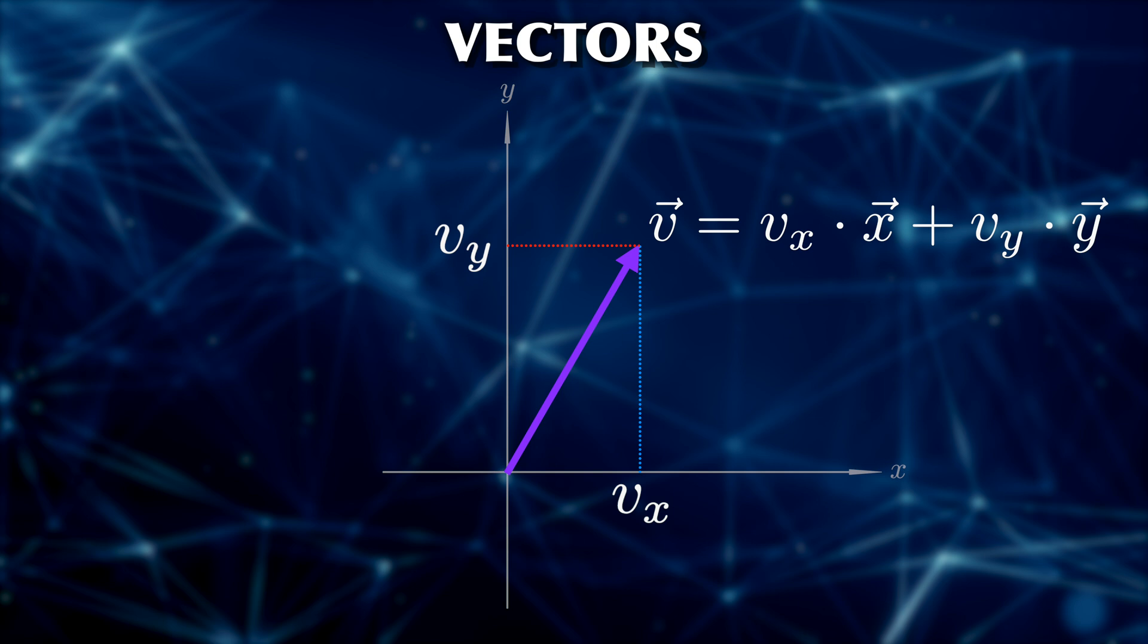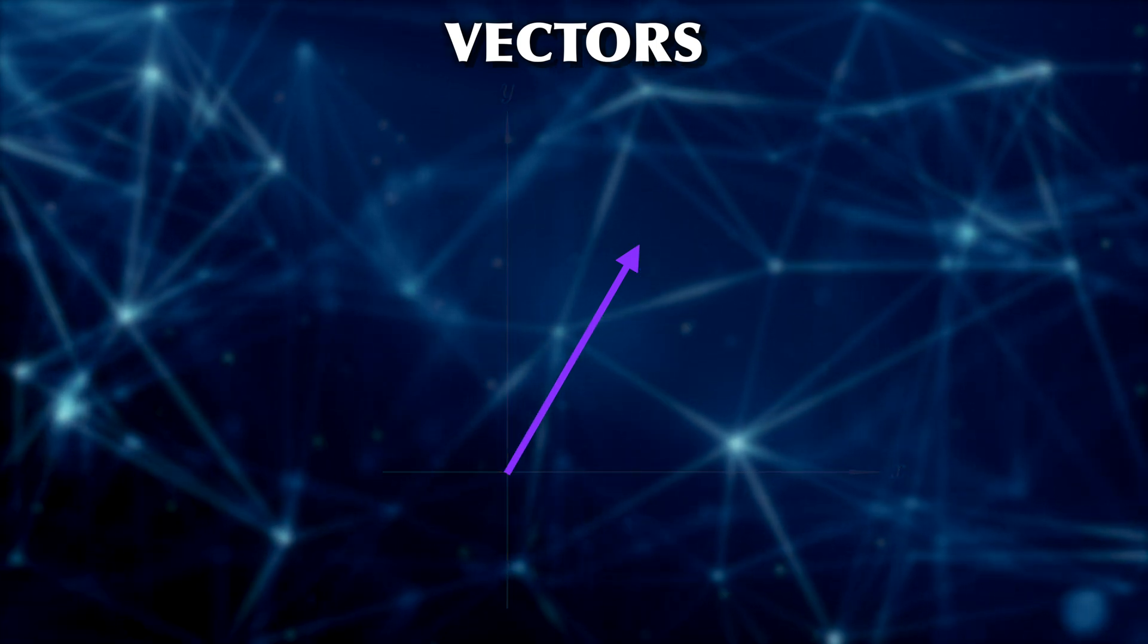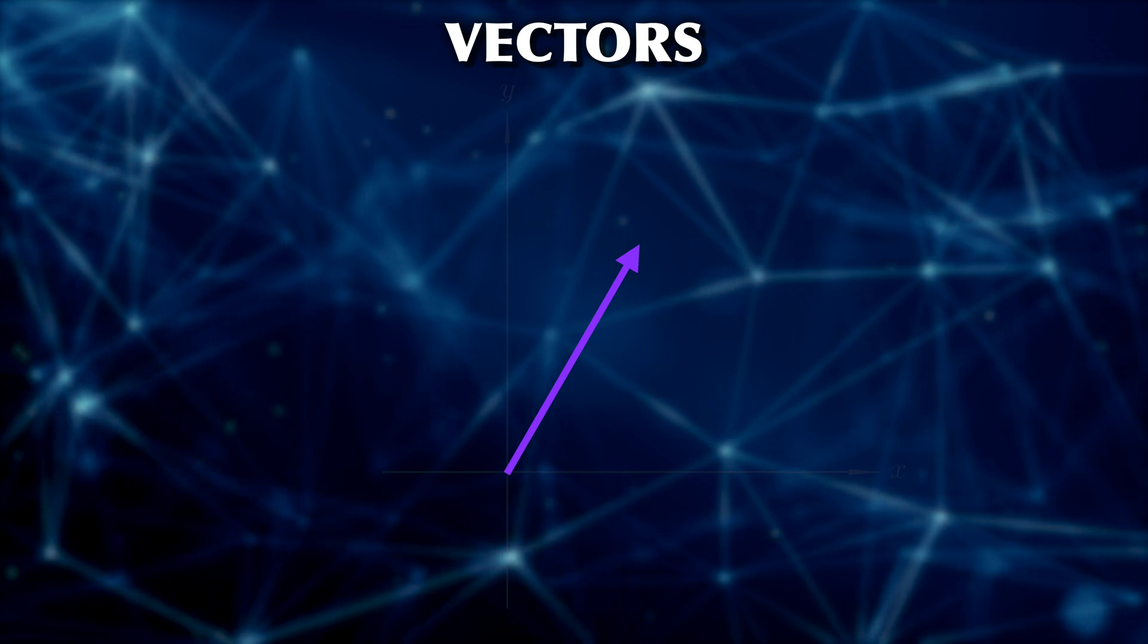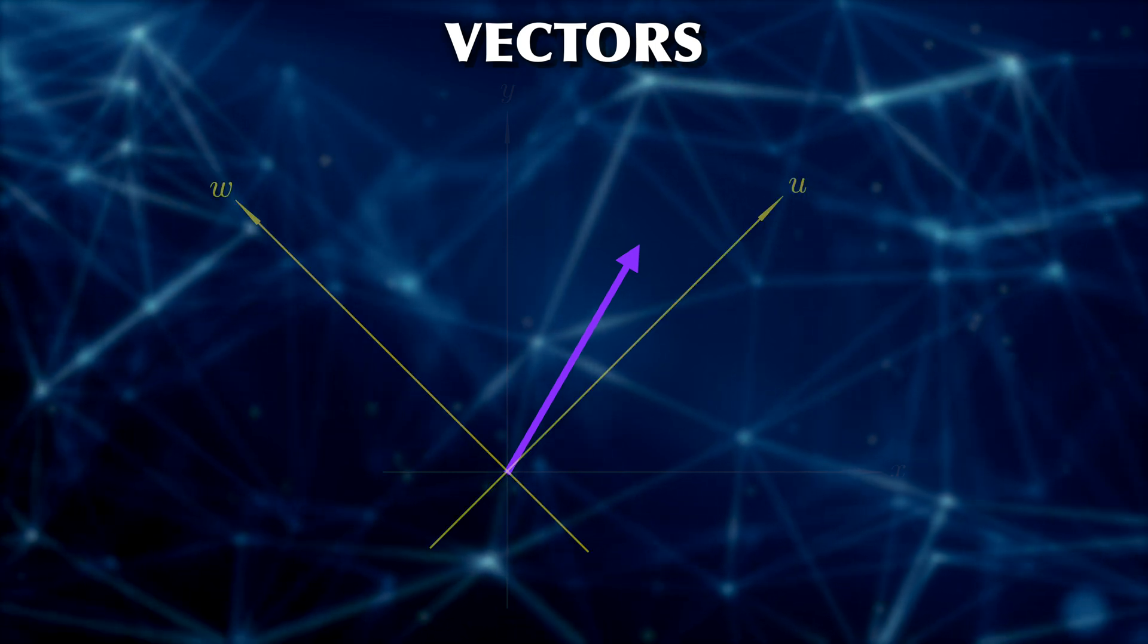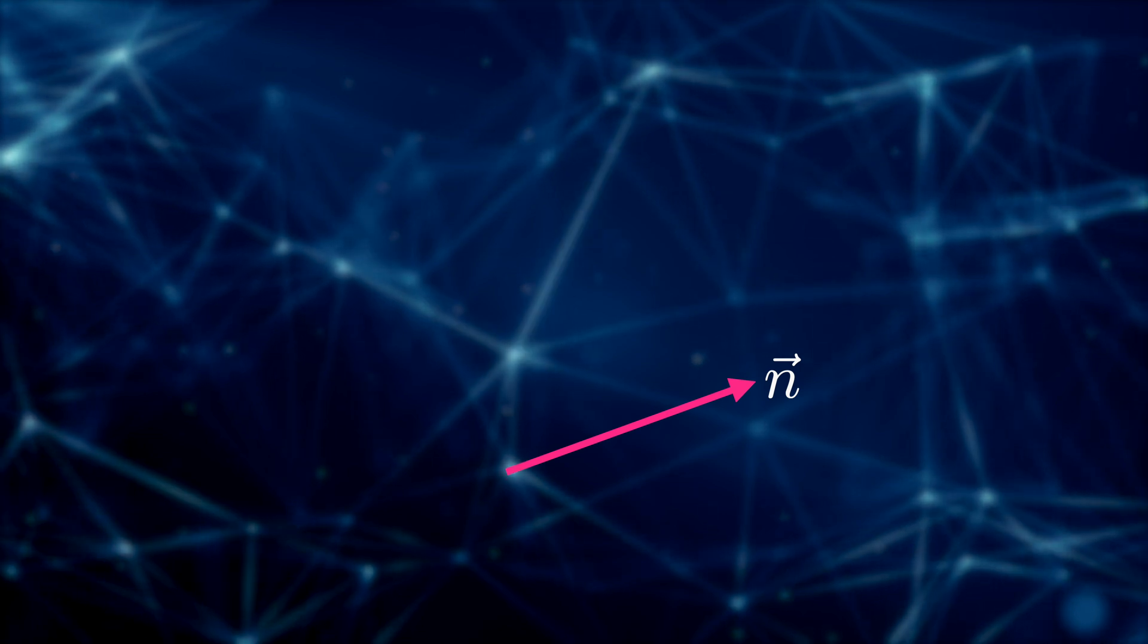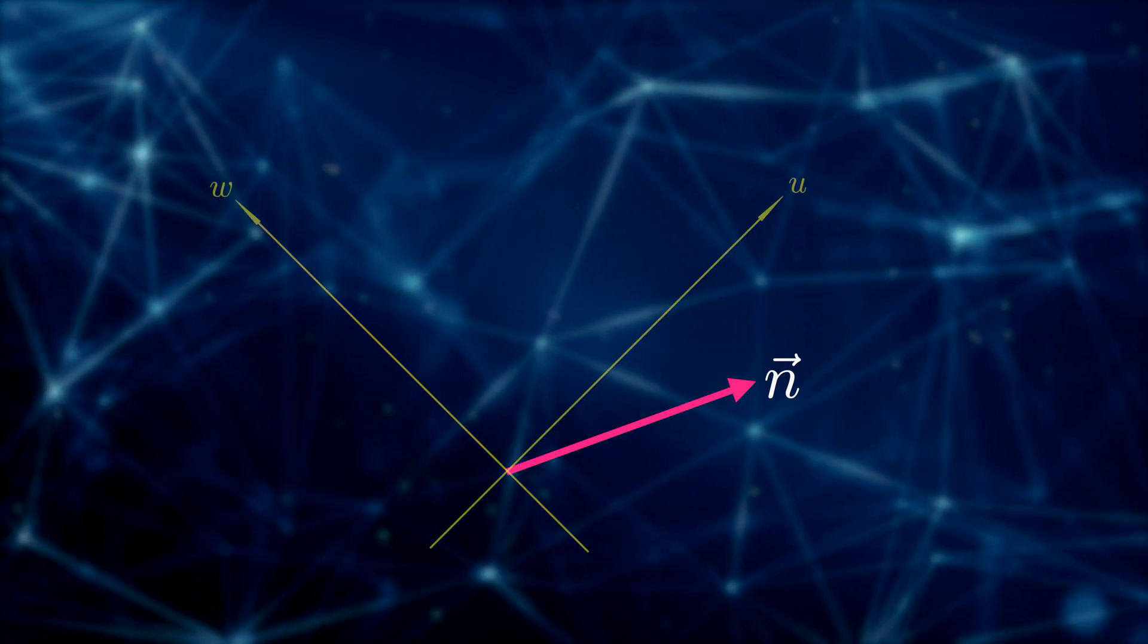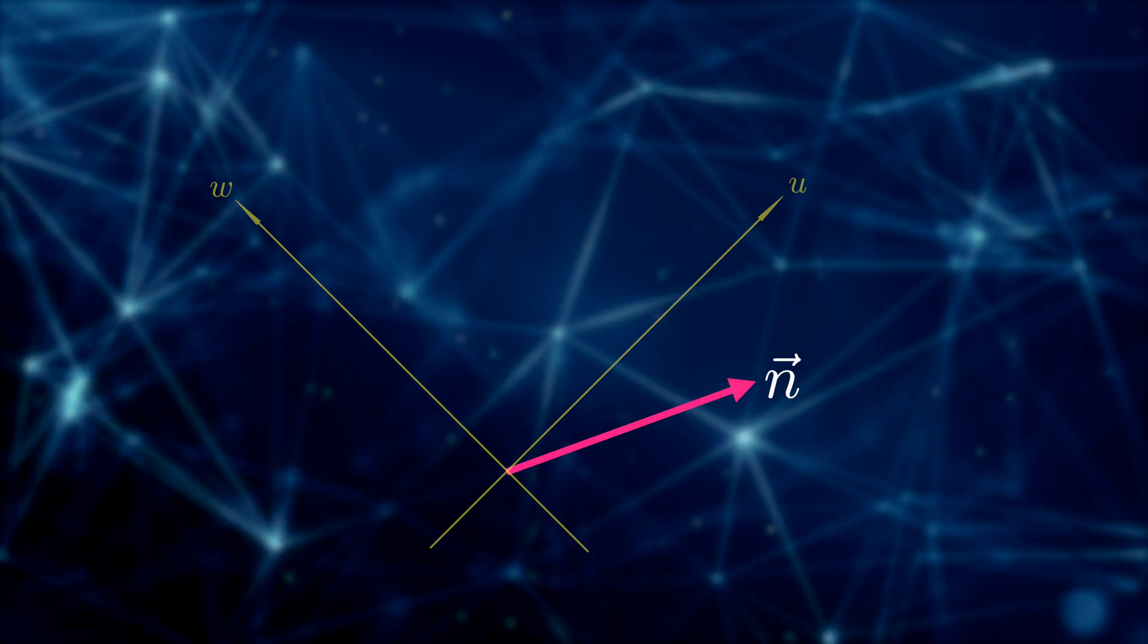Another important thing is that we do not have to use x and y to describe vectors. We can use a different basis. For example, two different vectors u and w. We can describe any vector in either the x and y basis or the u and w basis or any other basis that we choose. Okay, that's all we need. Let's go back to bits and qubits.